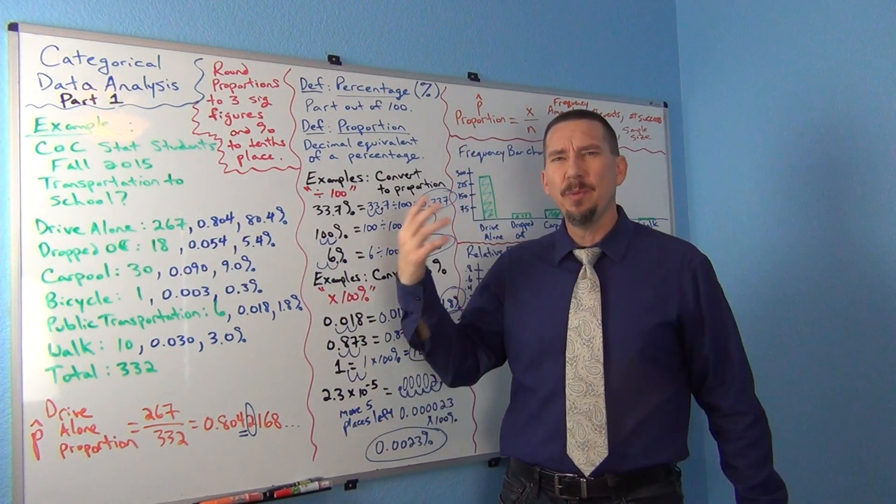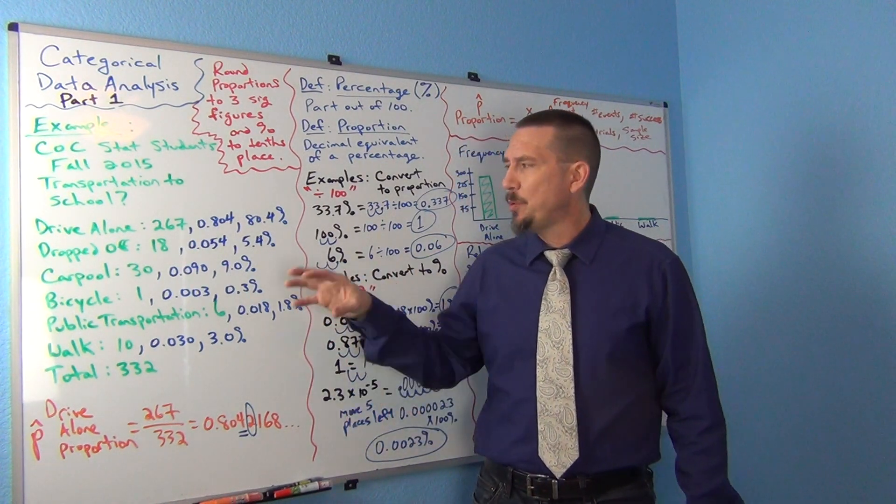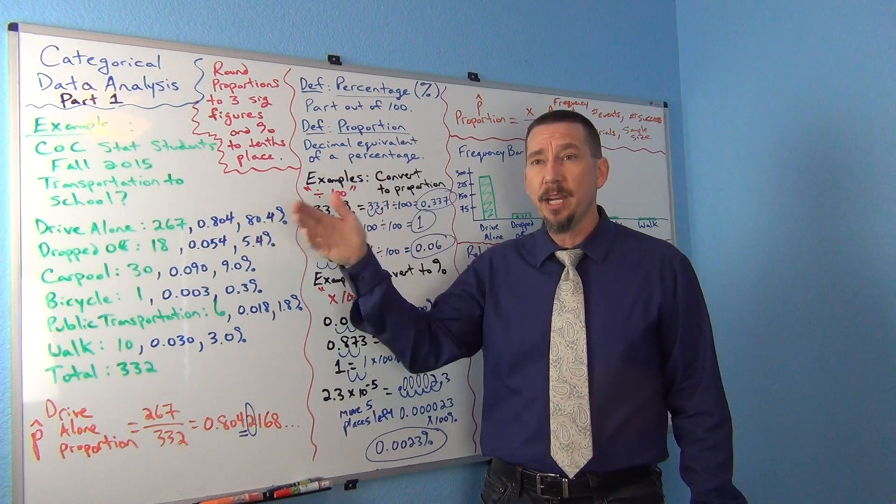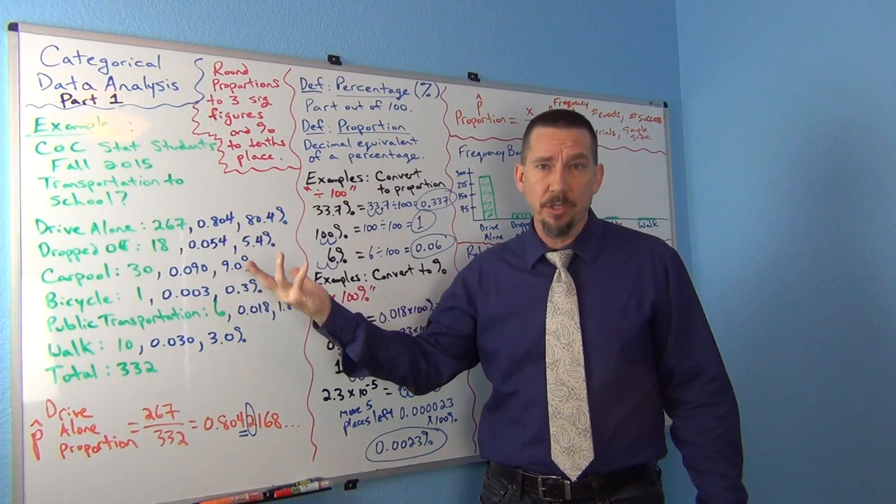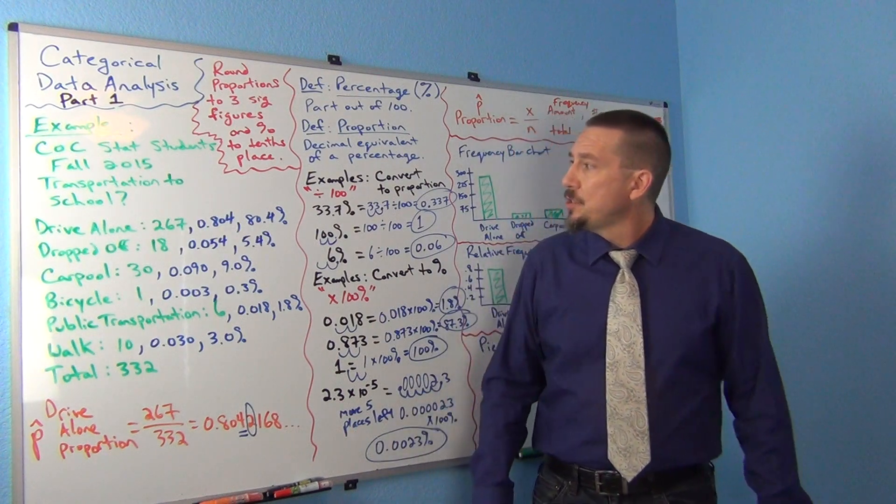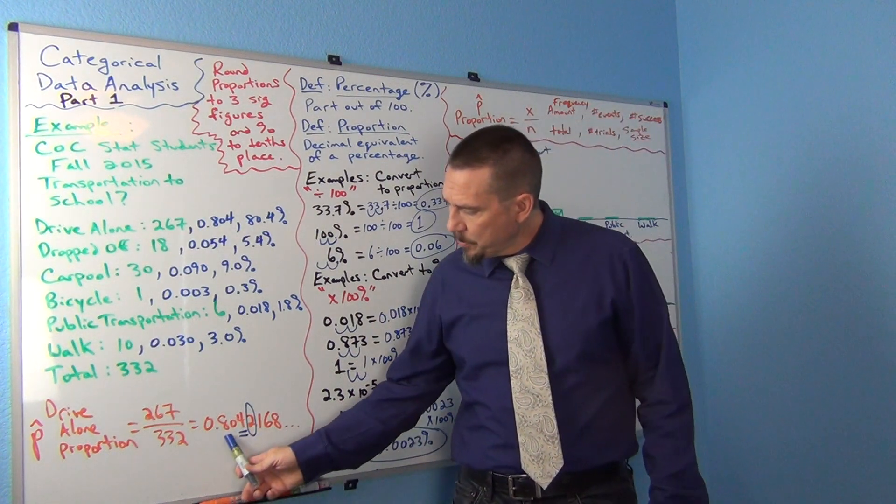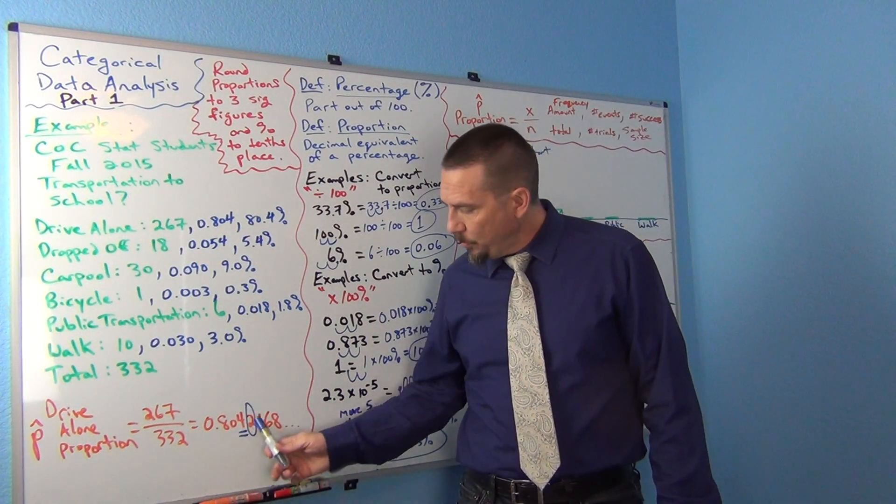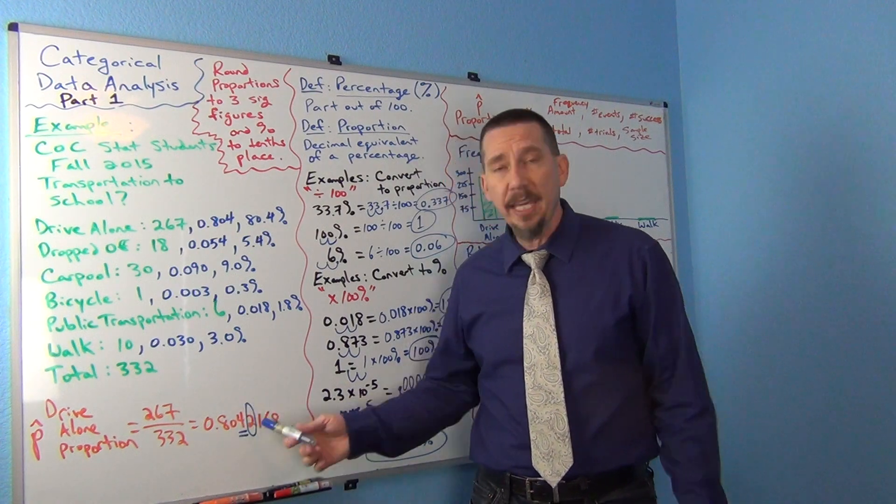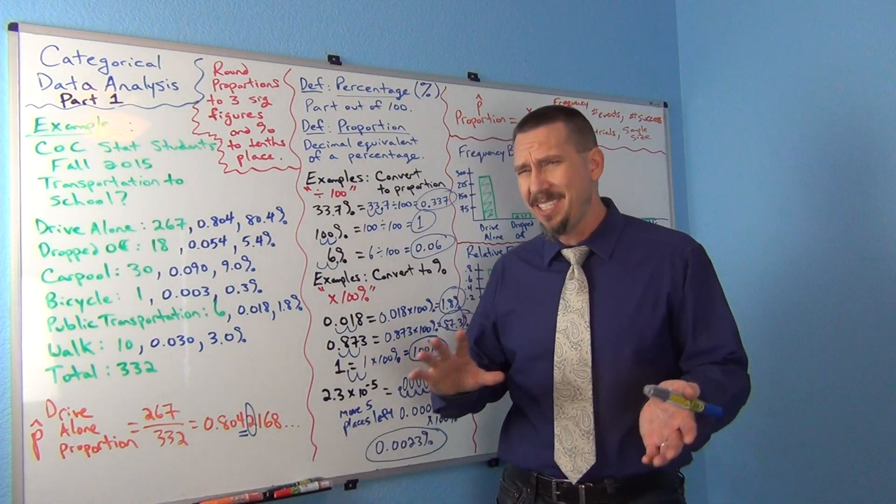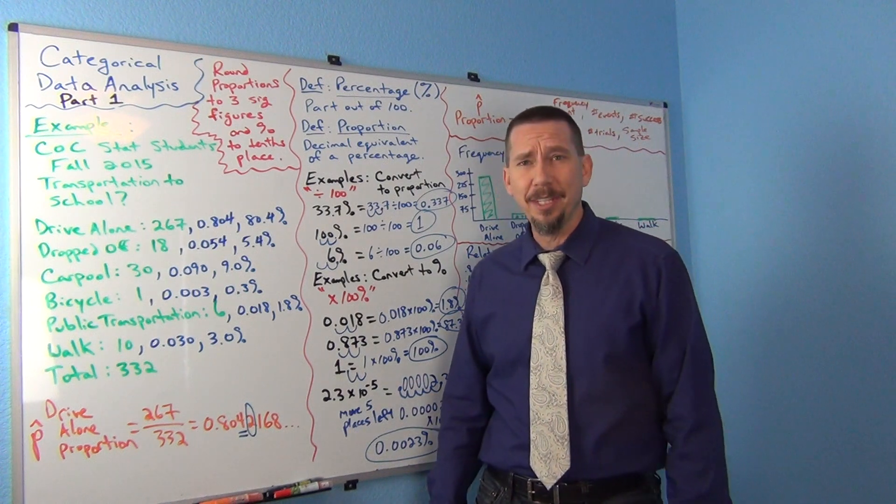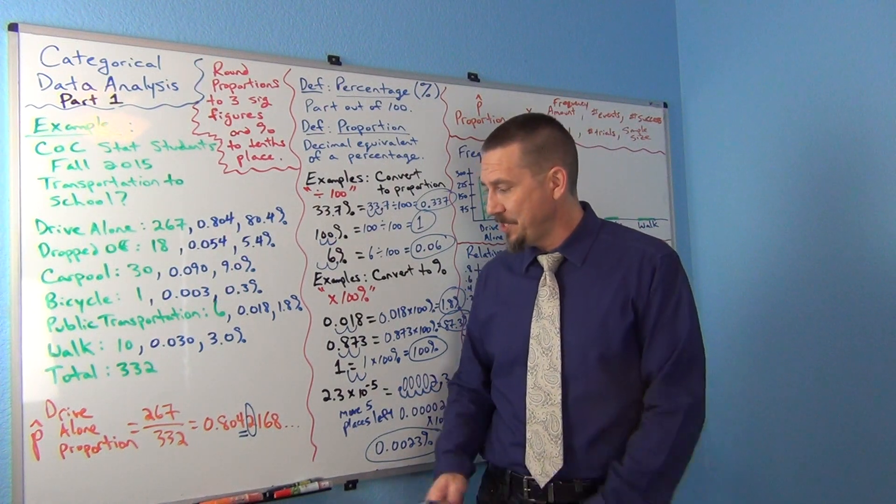So kind of think of it, an easy way to think of it is that the proportions usually will have three numbers to the right of the decimal and percentages will have one number to the right of the decimal. So in this problem, the three numbers to the right of the decimal would be 804. Now we get into sort of rounding. So hopefully you've seen rounding before. This video is not really explaining rounding per se.